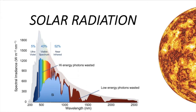Not all solar radiation is light. Solar radiation is measured in terms of energy. We commonly use units like joules per square meter per second, or watts per square meter. These measurements include not only light, but also heat and UV radiation.